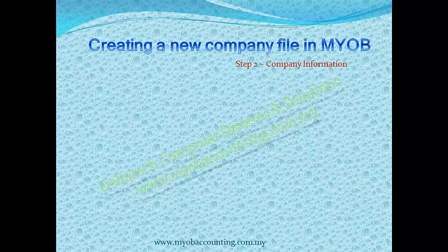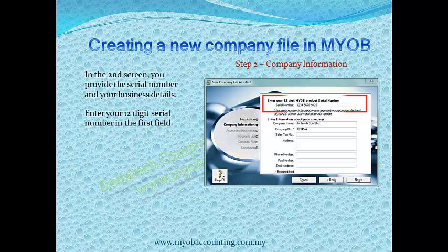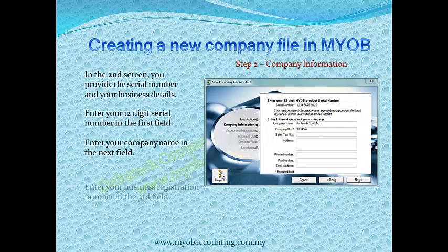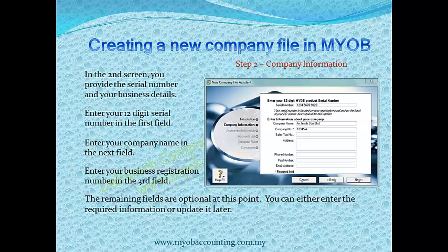In the second screen, you provide the serial number and your business details. Enter your 12-digit serial number in the first field. Enter your company name in the next field — note that this name is used on your business documents and reports. Enter your business registration number in the third field; this number is also used on business documents. The remaining fields are optional at this point — you can either enter the required information or update it later. Click Next when you are ready.